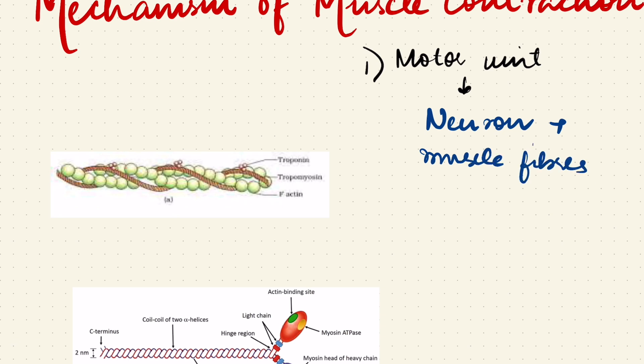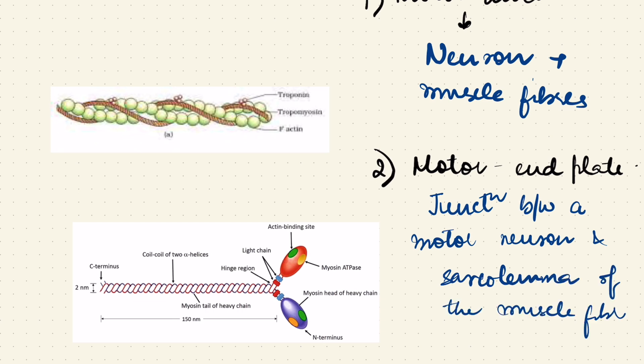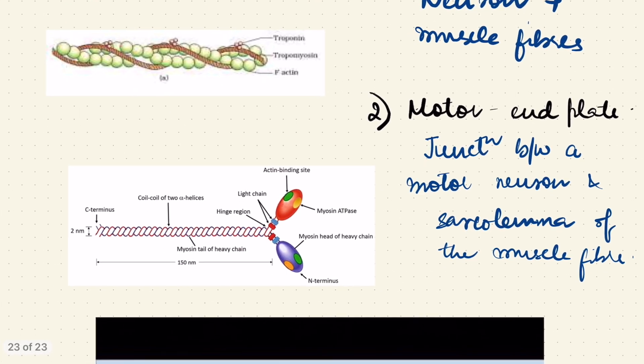Neuron plus the muscle fibers that it supplies is called a motor unit. Another definition is motor end plate. The motor end plate is nothing but the neuromuscular junction, or the junction between a motor neuron and the muscle fiber's sarcolemma. What is sarcolemma? I told you, the membrane, the outer membrane of the muscle fiber. So the junction between a motor neuron and sarcolemma of the muscle fiber.